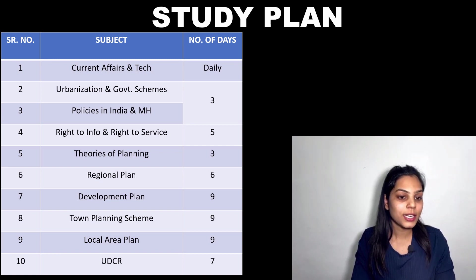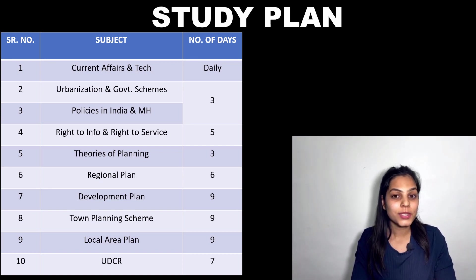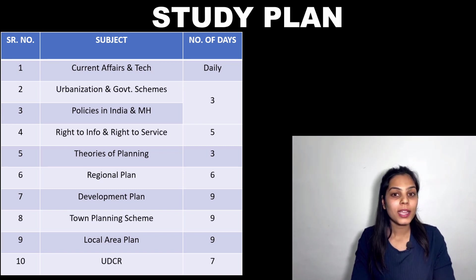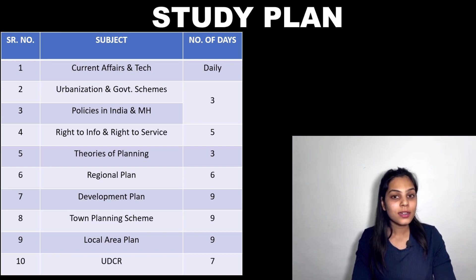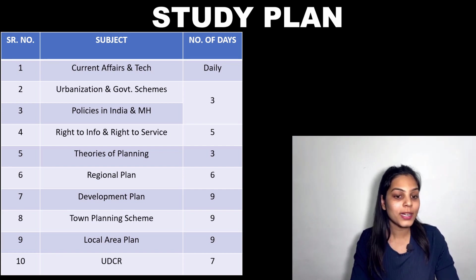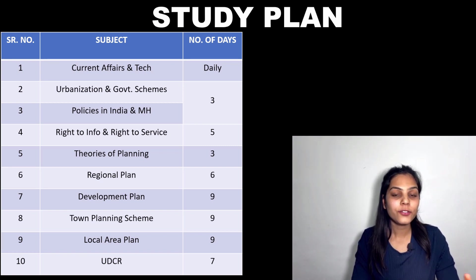The first is current affairs and technology. Current affairs is a subject where you can't give just four or five days — you have to do it daily, at least 45 minutes or one hour. The next is urbanization, government schemes, and policies in India and Maharashtra. MPSC has given a specified syllabus with the names of specific policies and schemes to study, so it is easy — three days are provided. The next is RTI and RTS, for which five days are enough.